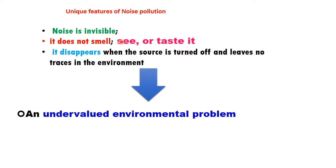Here are some unique features of noise pollution. Number one: noise is invisible. Noise pollution consists of frequencies which are invisible — it does not smell like air, smoke, or any kind of gas. Secondly, we can't see the noise or taste it. Third, it disappears when the source is turned off and leaves no trace in the environment. For example, if any gadget is creating noise, be it a music player, when it turns off, these vibrations are eliminated from the source and are no longer present in the environment.